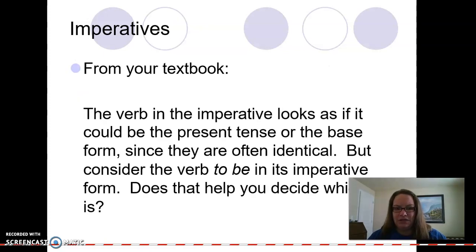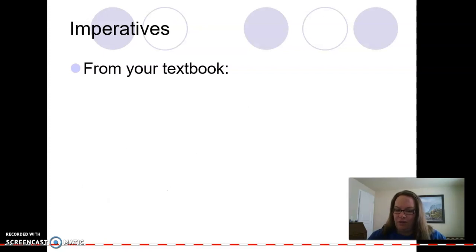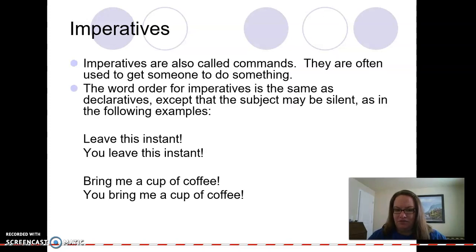So in our textbook it talks about the verb in the imperative. The verb in the imperative looks as if it could be the present tense or the base form of the verb because they're often identical. But one way to check for this is to use the verb to be in its imperative form. If we instead do something like a to be verb, like be quiet or be good, then we see that it's actually the base form of the verb. It's not conjugated at all to match with the present tense.